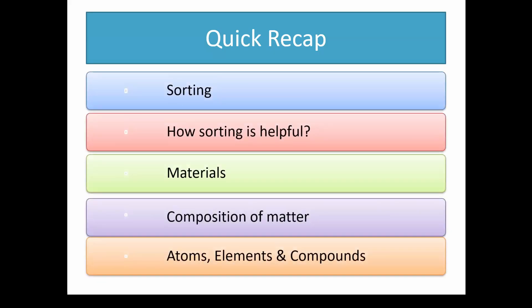Now before I continue with the chapter, let's have a quick recap. So the first thing — what is sorting? The systematic arrangement of things on the basis of certain similarities or differences is called sorting or classification. Classification helps us to study the properties of things and group them. It helps us to be organized and saves our time and effort to locate things.